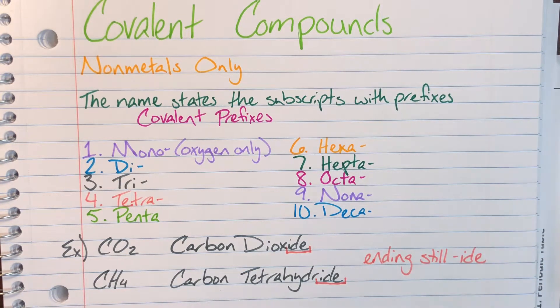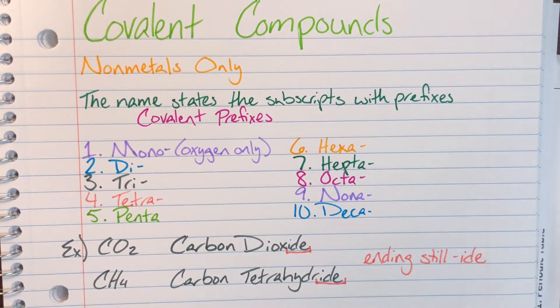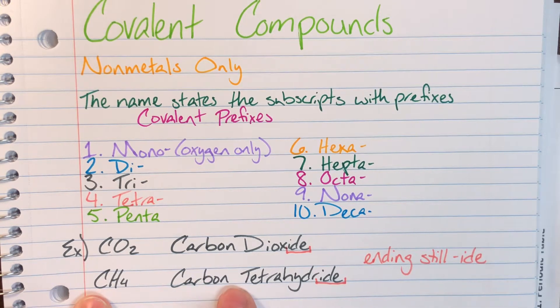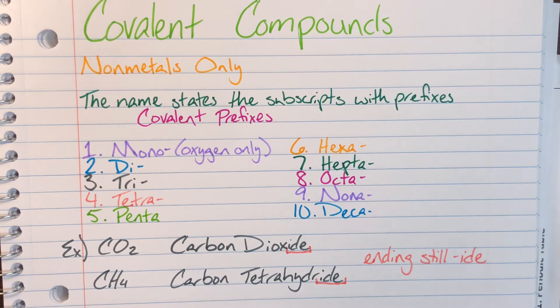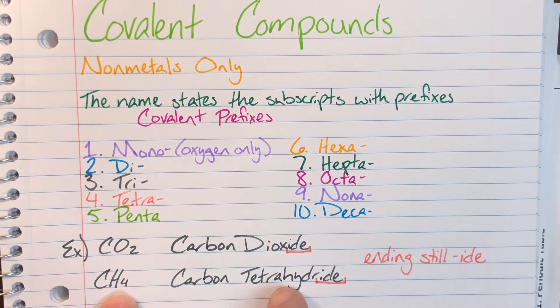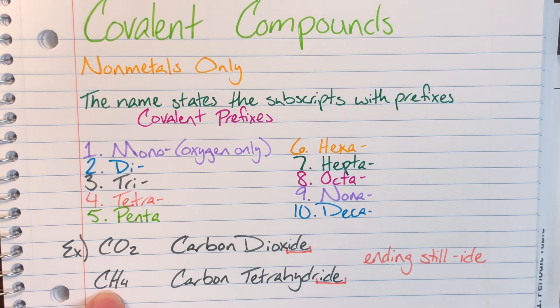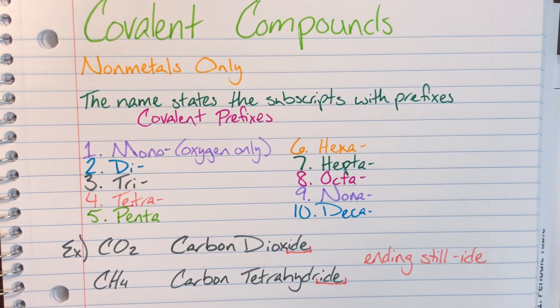And my next example is just going to be CH4. Again, I only have one carbon. If I had more of that initial element, then I would be using those prefixes, but for these examples, I don't. So it just so happens that again, I'm not going to use a prefix for carbon because it's not oxygen, it's not special enough. And then I am going to use a prefix for that second element. I'm going to use the prefix for four, which is tetra, and then I will use the anion name of that element. So hydrogen will become hydride. I have four of them, so it's going to be carbon tetrahydride.